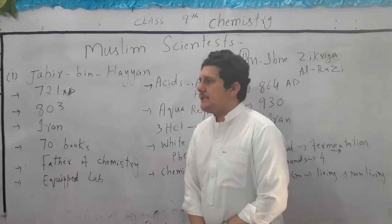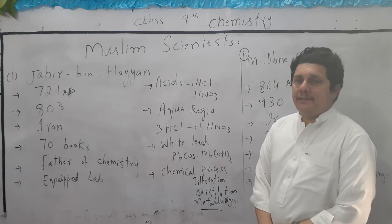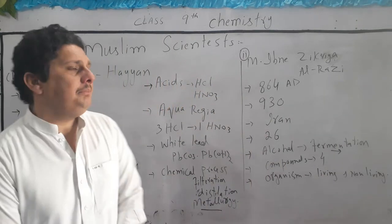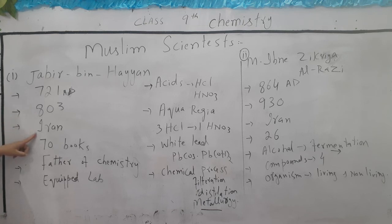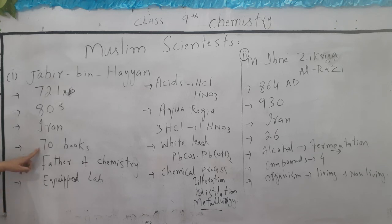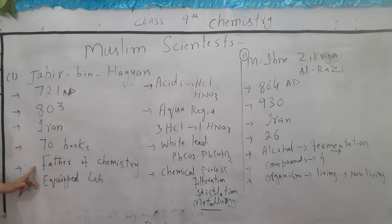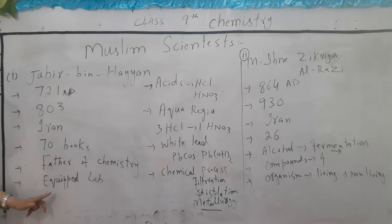Today we will discuss Muslim scientists. The first is Jabir bin Hayyan. His date of birth is 721 AD and his date of death is 803 AD. His place of birth is Iran. He wrote 70 books on chemistry. Jabir bin Hayyan is known as the father of chemistry. He was the first chemist who had his own equipped laboratory.